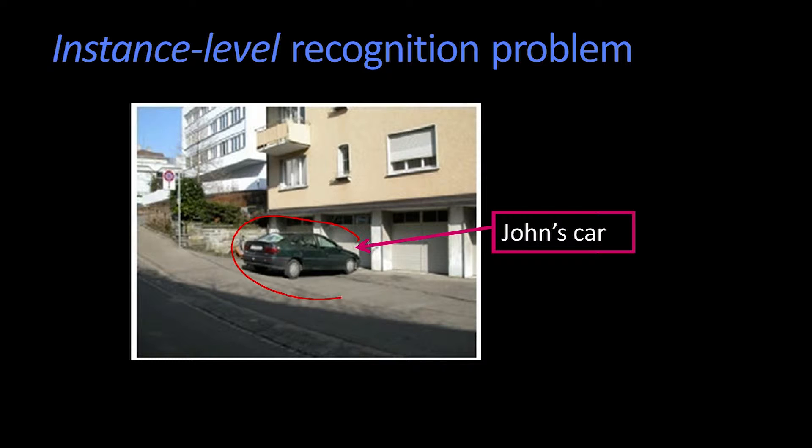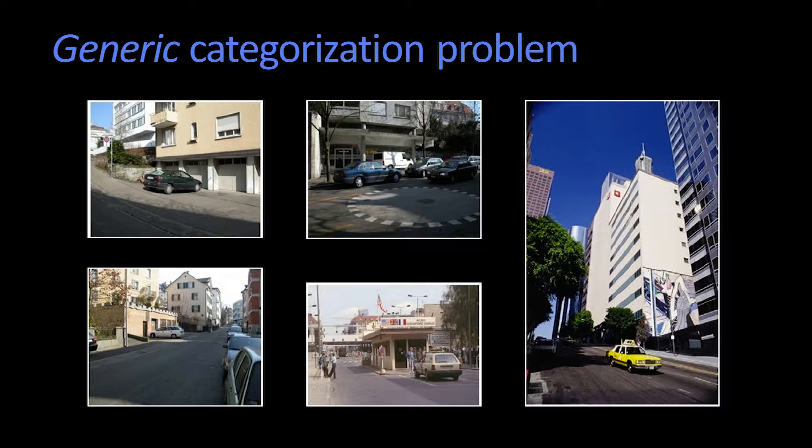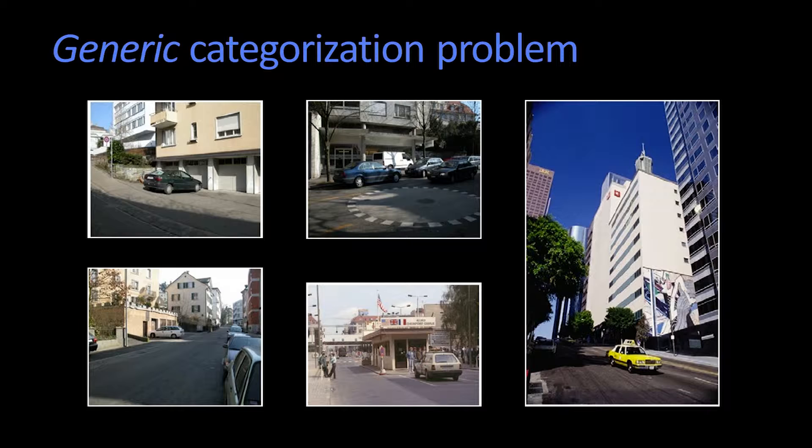is this difference between single instance labeling. Here's a picture of a car, and we say that's John's car. We want to be able to find that particular thing, versus we'd like to be able to find all of these things and say those are cars. For the most part, we're going to be worrying about this problem, the generic categorization problem.